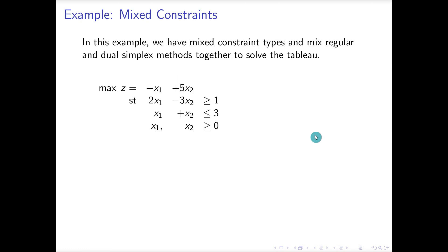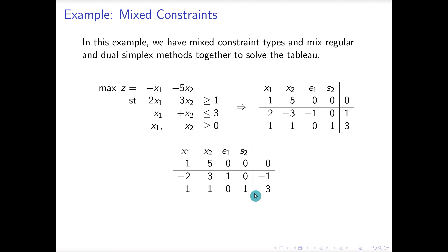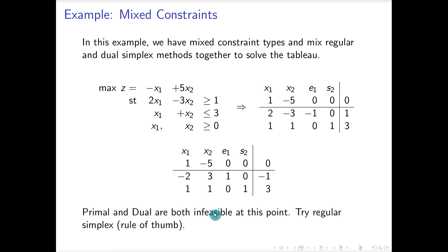Here's another example — this time with mixed constraints: a greater-than-or-equal-to and a less-than-or-equal-to, along with mixed signs in row zero. Here's our initial tableau. We multiply through by -1 on the first row. Now we have a solution, but it's not feasible. The dual is also not feasible. When both primal and dual are infeasible, the rule of thumb is to try regular simplex first to see if we can make one of them feasible.